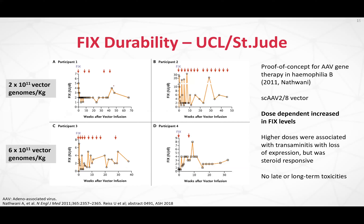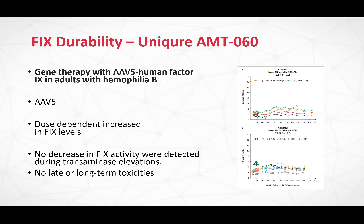For durability, factor nine is very interesting. Graphs from the initial proof-of-concept study from 2011 showed that 10 to 11 years on, patients who received gene therapy have the same levels of expression. The AMT-060 factor nine data is effectively demonstrating the same effect — over three years on, there has been no loss of factor activity level. So those levels are still being maintained.